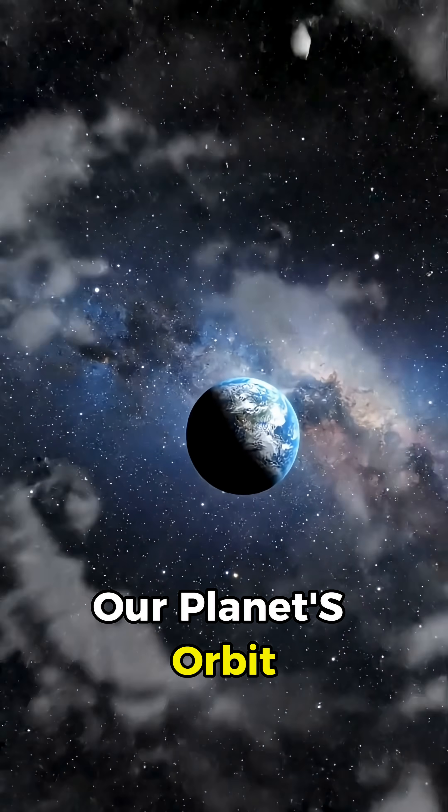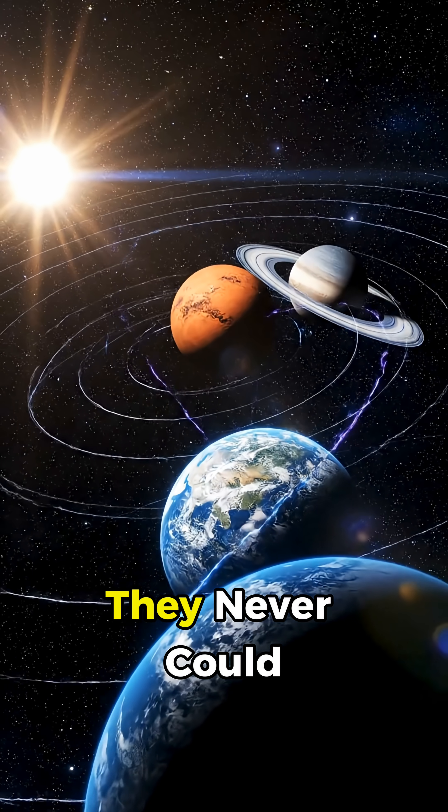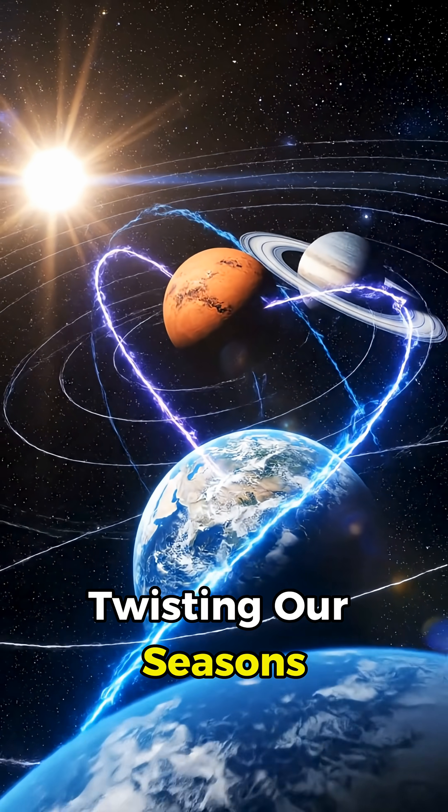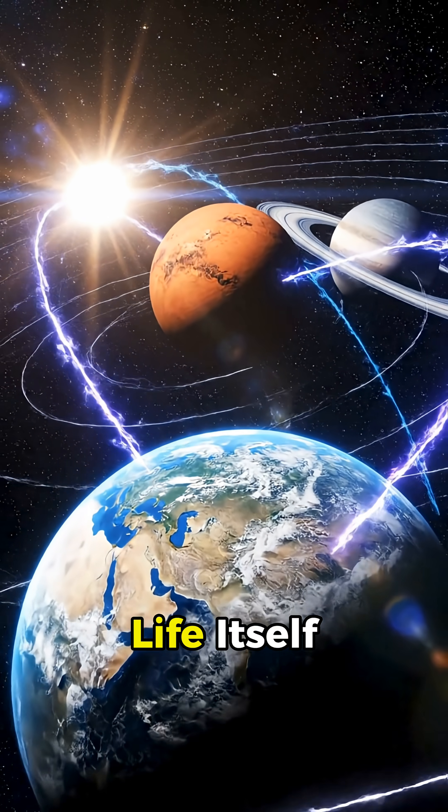Our planet's orbit even starts to subtly distort as neighboring worlds tug on us in ways they never could before, twisting our seasons, shifting our tides, and gradually warping the rhythm of life itself.